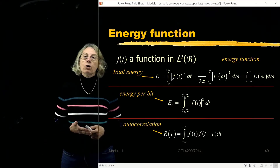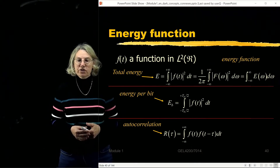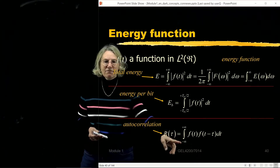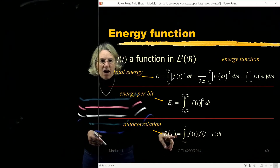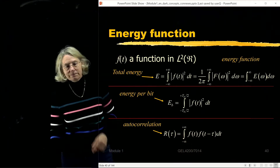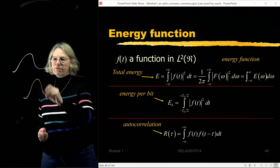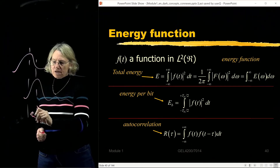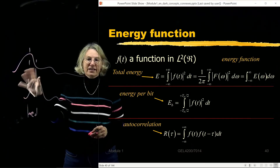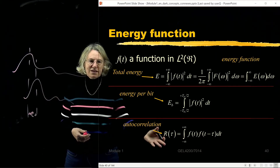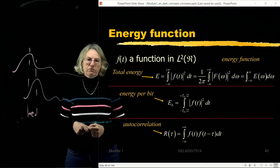I can also define the autocorrelation function for any function of time. The definition of an autocorrelation function for a time domain signal is an integral from minus infinity to infinity of the signal with itself with some time delay tau. This takes a function in time and the same function with some lag, multiplies them, and takes the integral under the product. This is the definition of the autocorrelation function.